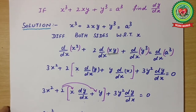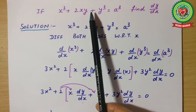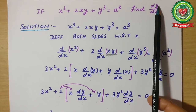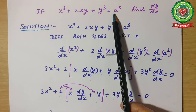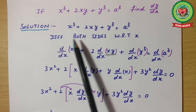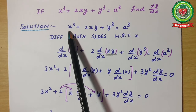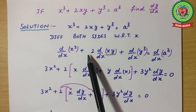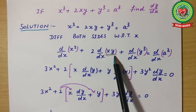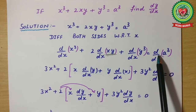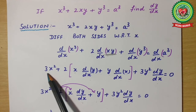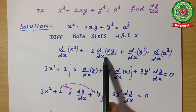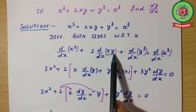Taking one more example: x³ + 2xy + y³ = a³; find dy/dx. Here a³ is a constant term. Write down the expression and differentiate both sides with respect to x: d/dx of x³ + 2 · d/dx of (xy) + d/dx of y³ = d/dx of a³. Constant term differentiation is 0. x³ differentiation is 3x². For xy, which is in multiplication form, we apply the product rule: x · d/dx(y) + y · d/dx(x).